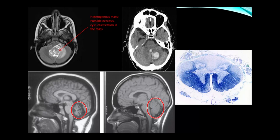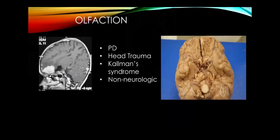Friedreich's ataxia affects the cerebellum prominently but also the spinocerebellar tracts, corticospinal tract, and posterior columns — contributing to gait ataxia and upper motor neuron findings. It is another trinucleotide repeat disorder.